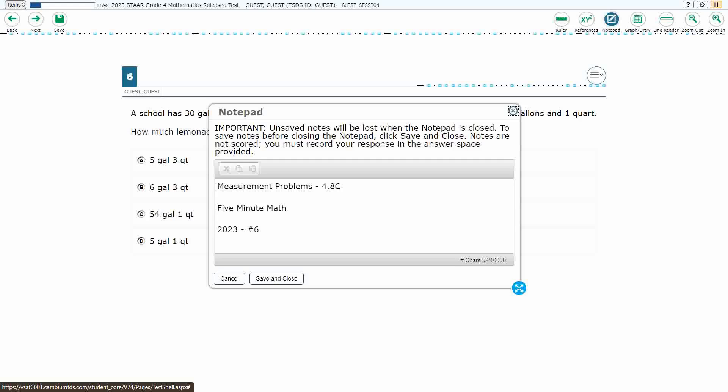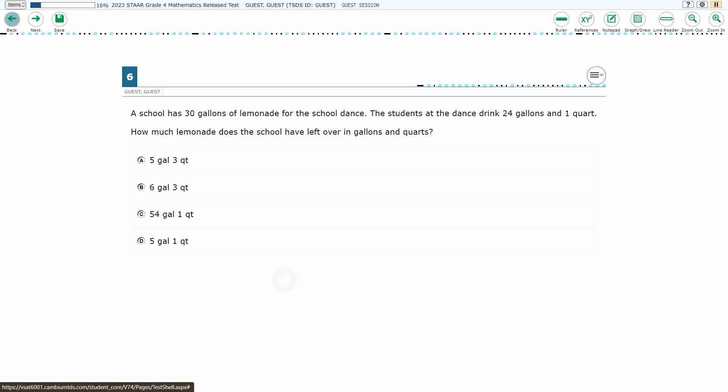Hello, and welcome to 5-Minute Math. Today we are looking at the 4th grade concept of measurement problems. This is standard 4.8c in the great state of Texas. We are using item number 6 of the 2023 released STAR test. If you haven't done so already, please take a moment to pause the video, work this problem out on your own, unpause it, and we will look at our answers together.